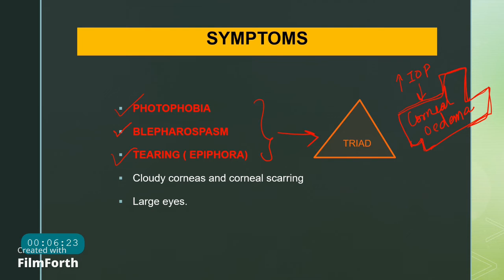Additional complaints that parents may report include cloudy corneas and corneal scarring, and abnormally large eyes. Large eyes occur because in newborns the eyeball is quite stretchable, so as pressure within the eyeball increases, the eye enlarges in size. Corneal edema causes loss of corneal clarity and transparency.